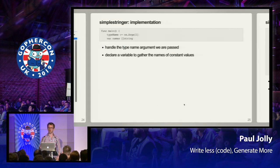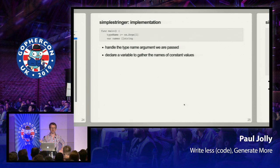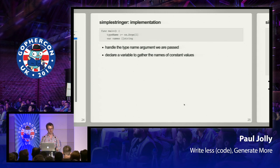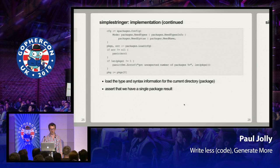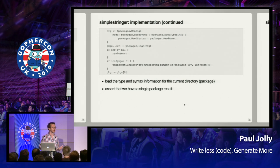Let's jump straight into the implementation — I'm not going to do a live demo because that would go horribly wrong. It's a code generator, it's a program, therefore it's a func main. We need to take in an argument which is going to be the type name, and we declare a variable to gather the names of the constants of that type.